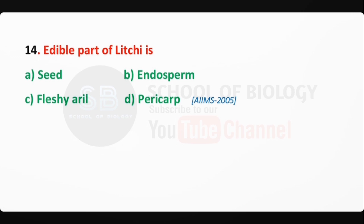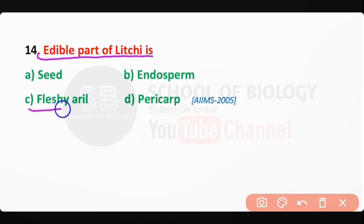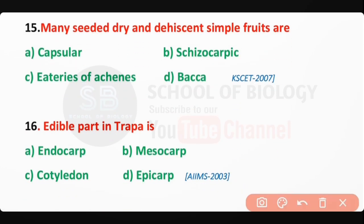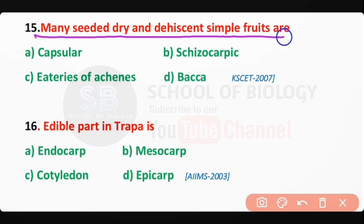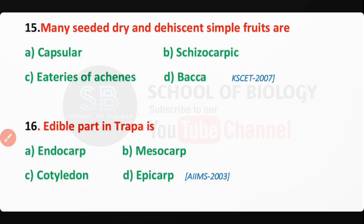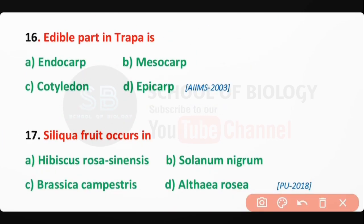Q14: The edible part of lychee is actually the fleshy aril — correct answer is option C. Q15: Many-seeded dry and dehiscent simple fruits are known as capsular fruits — correct answer is option A. Q16: The edible part in Trapa fruit is the cotyledon — correct answer is option C.